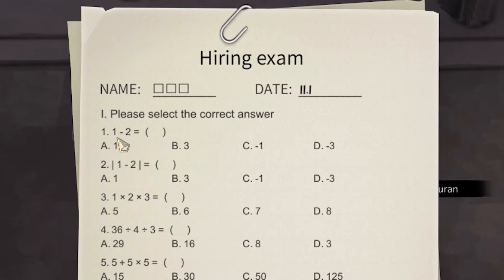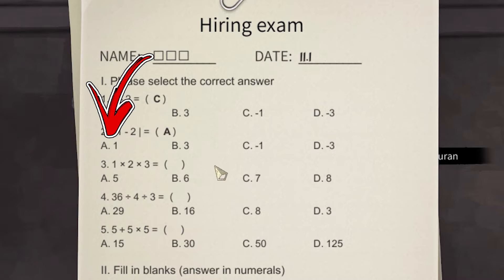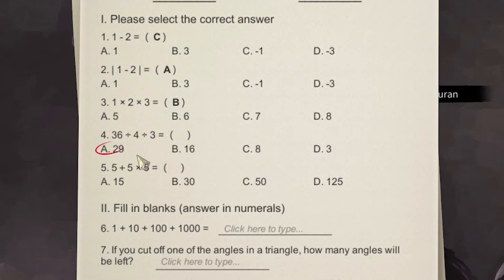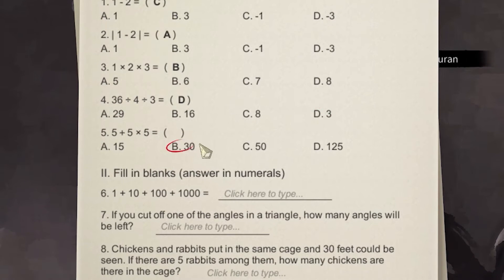For the first question, the correct answer is C. The second is A, the third is B, the fourth is D, the fifth is B.